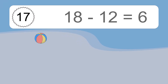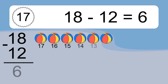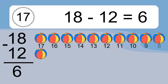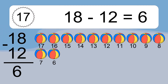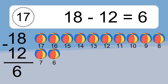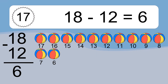18 minus 12 equals what? 18 minus 12 equals 6. Let's count it. 17, 16, 15, 14, 13, 12, 11, 10, 9, 8, 7, 6.